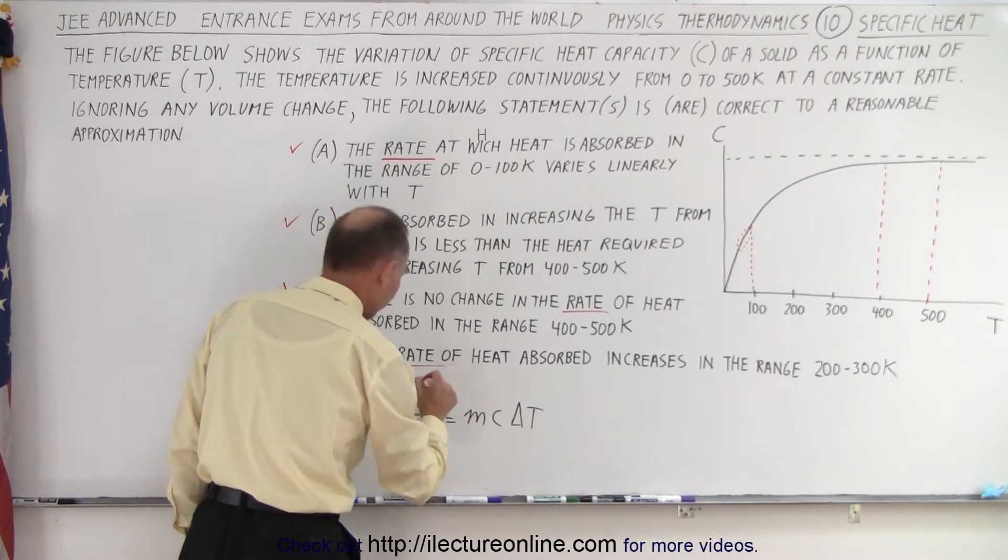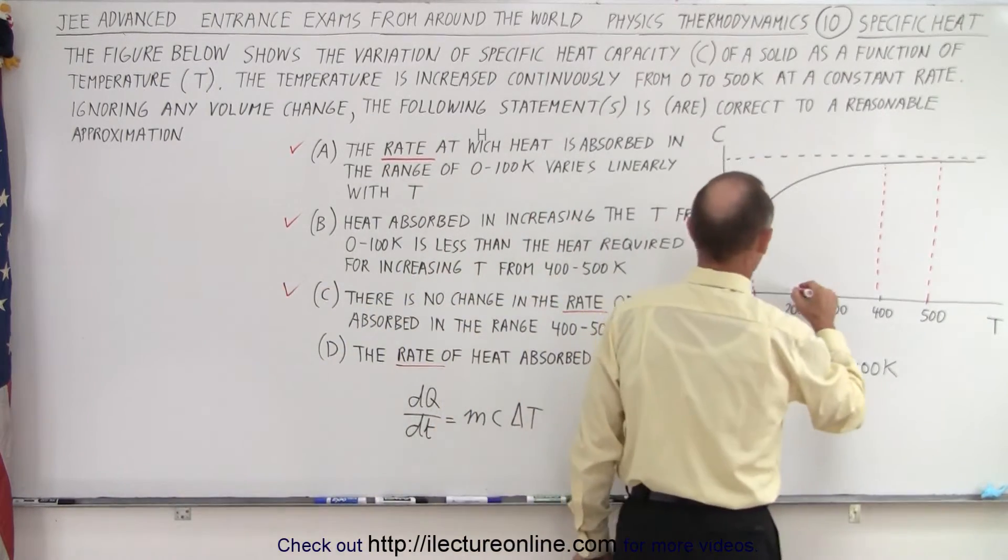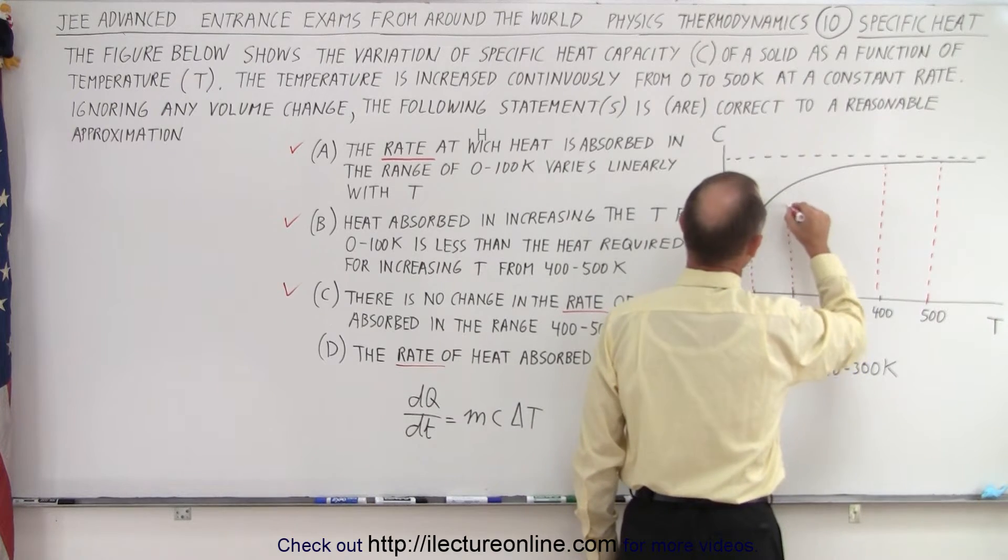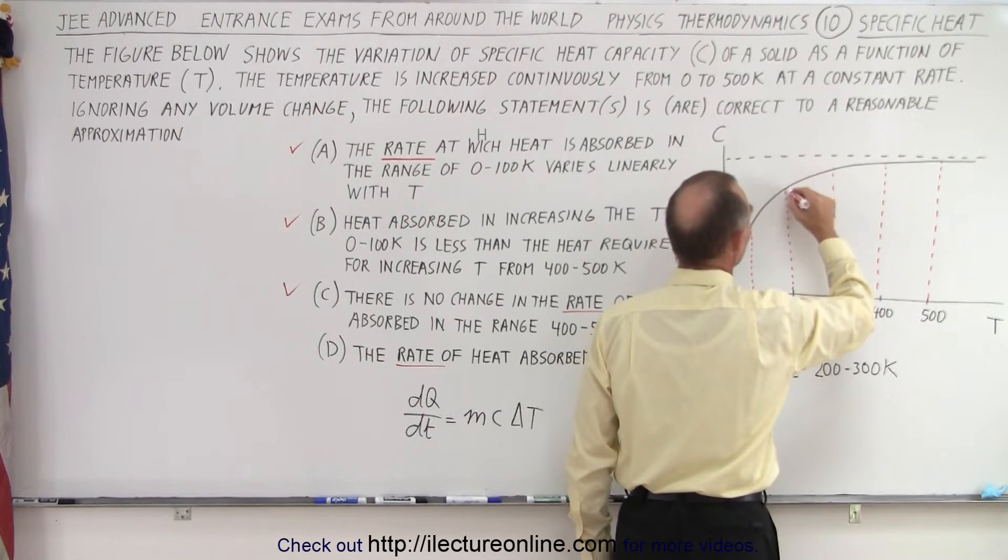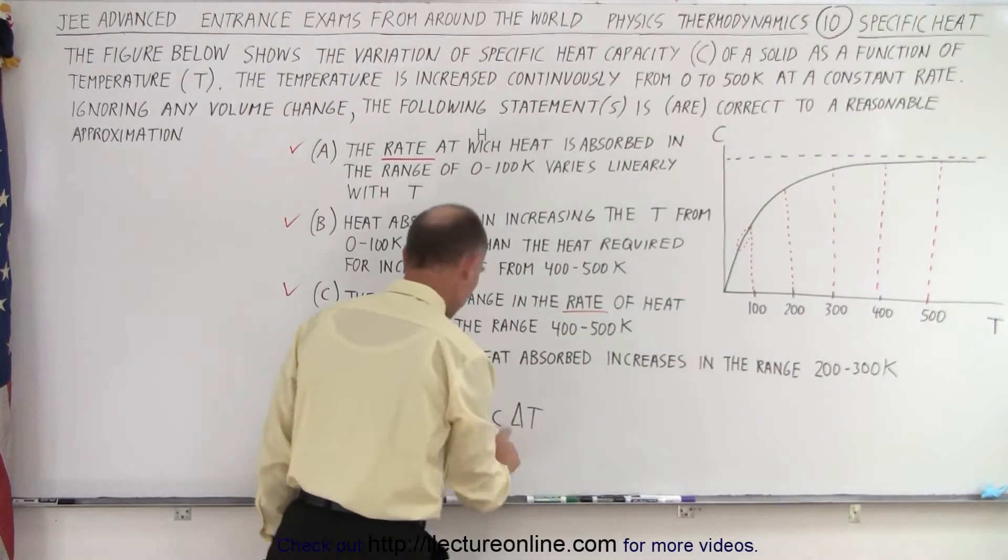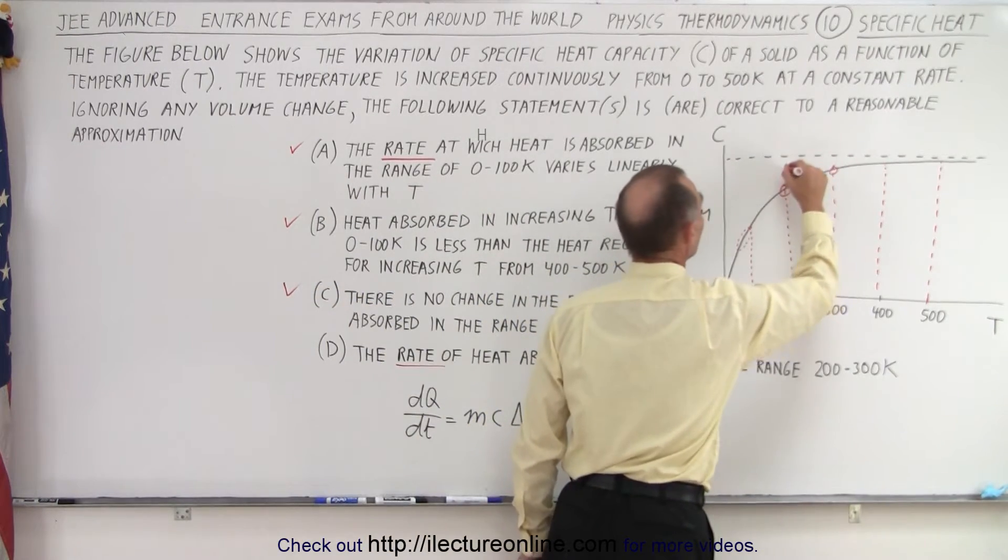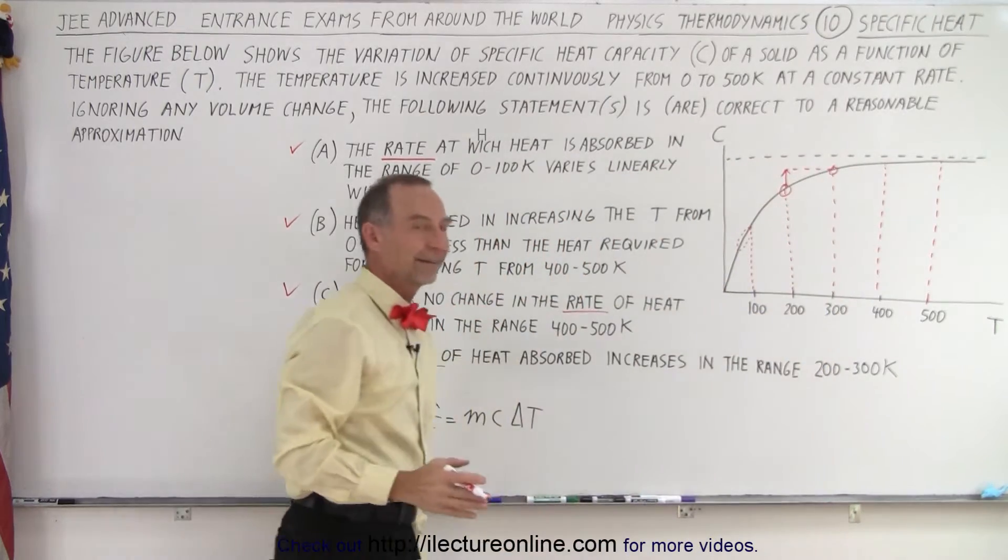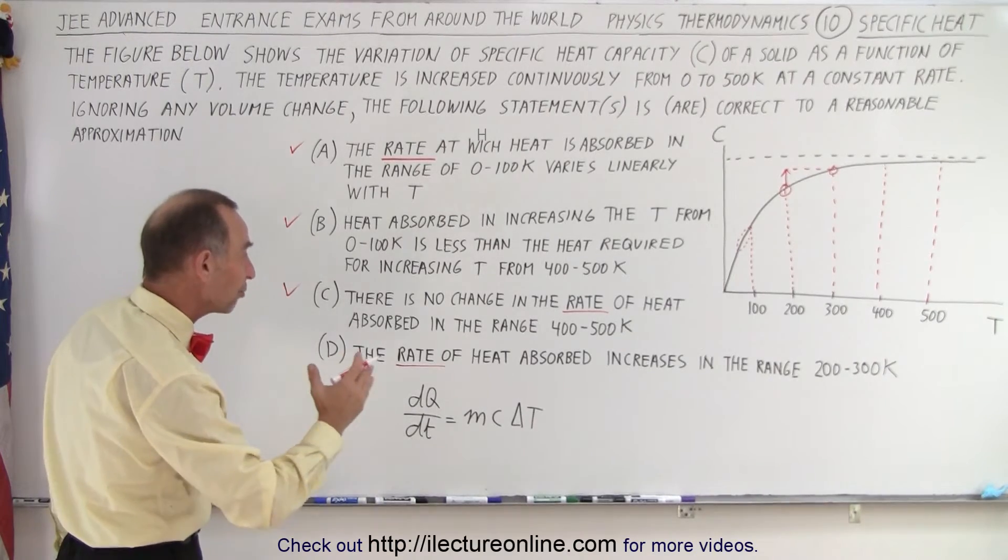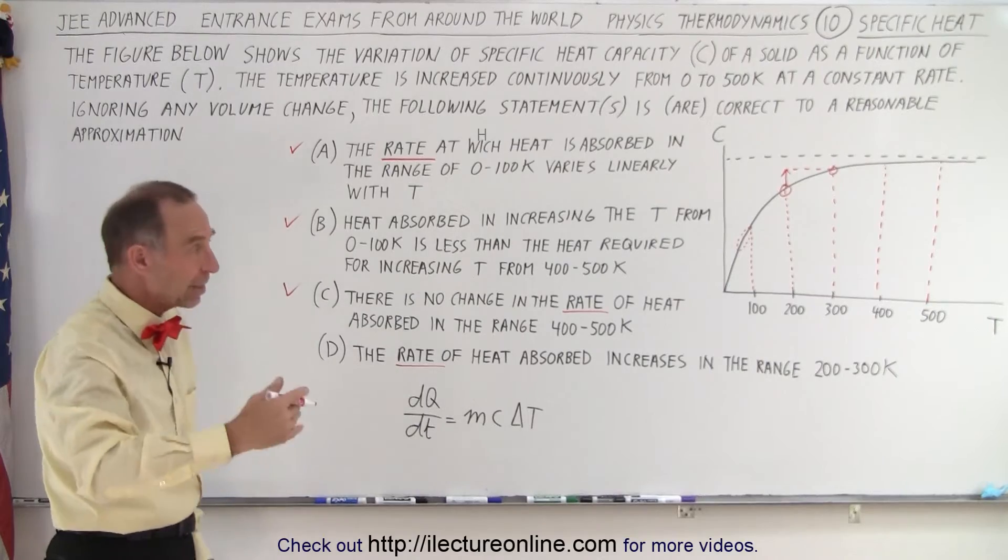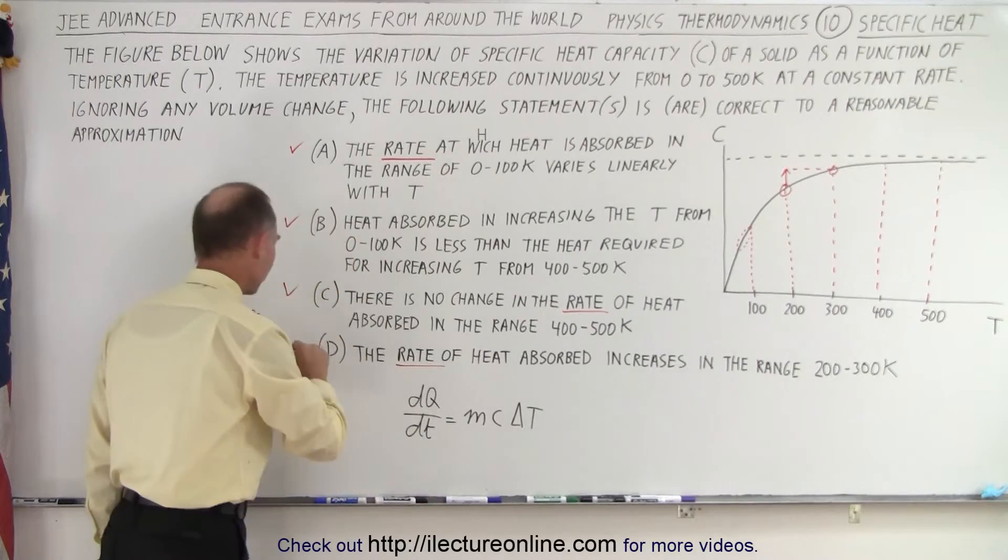And finally, for D, the rate, again, it talks about the rate, DQDT of heat absorbed increases in the range from 200 to 300 K. And notice, here we are at 200 K. Here we are at 300 K. You can definitely see that the rate increases from here to here because the C increases from this point to this point. There's an increase. And so, yes, the rate of heat absorption is increasing. If you keep the change in temperature constant, then the amount of heat required has to increase as C increases. And therefore, you can say, yes, answer D is correct as well.